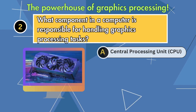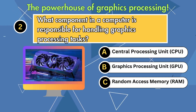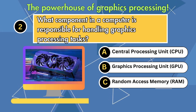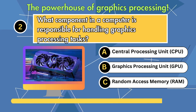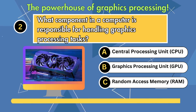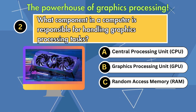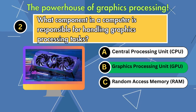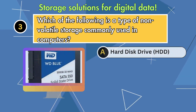What component in a computer is responsible for handling graphics processing tasks? Option 1: Central Processing Unit (CPU). Option 2: Graphics Processing Unit (GPU). Option 3: Random Access Memory (RAM). Answer is Graphics Processing Unit (GPU).